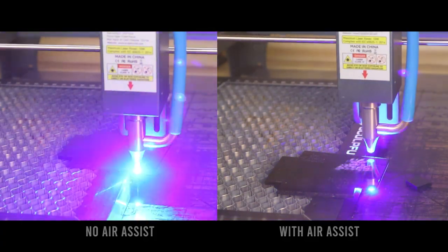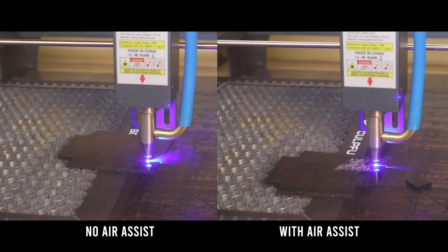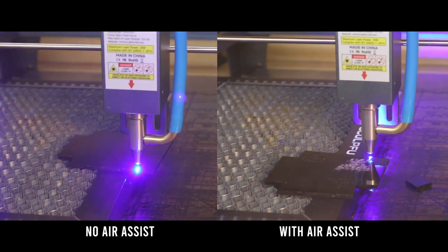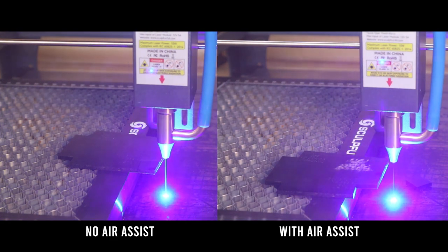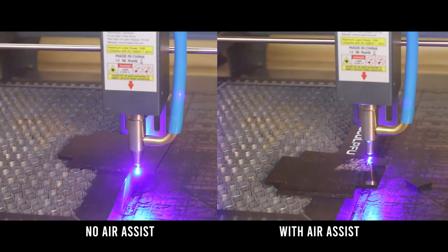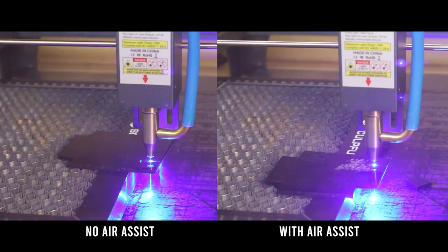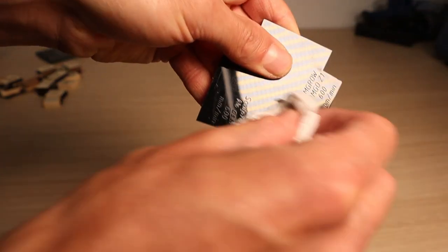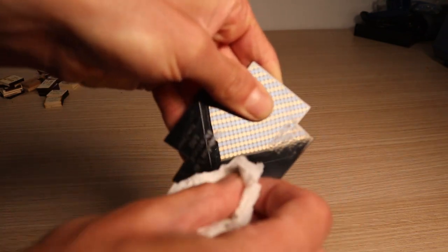I also tested the performance at cutting 3mm and 10mm black acrylic at 600mm per minute. It took only 5 passes to cut 3mm thick black acrylic with or without air assist. Engraving with air assist left white smoke stains which can be wiped off with a towel.